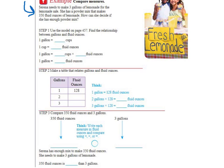Serena needs to make three gallons of lemonade for the lemonade sale. She has a powder mix that makes 350 fluid ounces of lemonade. How can she decide if she has enough powder mix? In other words, it wants us to say if 350 fluid ounces is equal to or greater than three gallons. So we need to do a conversion here.